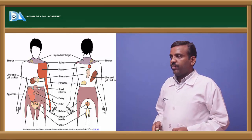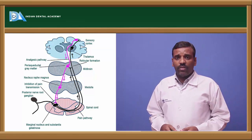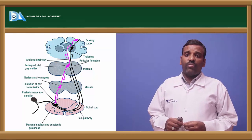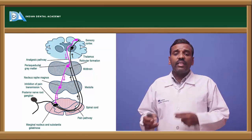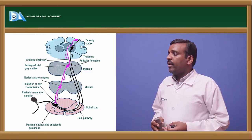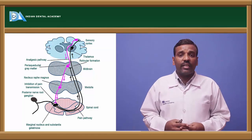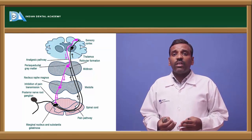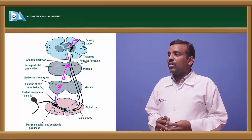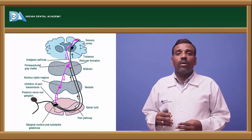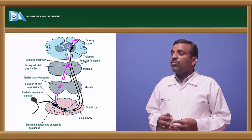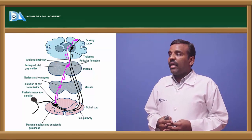The pain sensation pathway involves free nerve endings and Pacinian corpuscles. The pain pathway is the lateral spinothalamic tract. Receptors receive impulses and send them to the marginal nucleus and substantia gelatinosa of the spinal cord, then through the spinal cord to the medulla oblongata, specifically the nucleus raphe magnus.